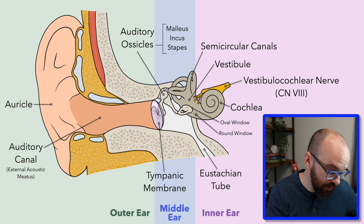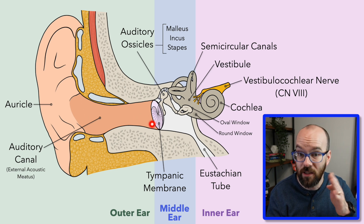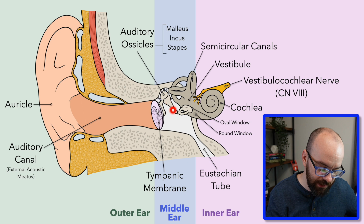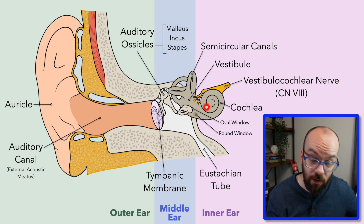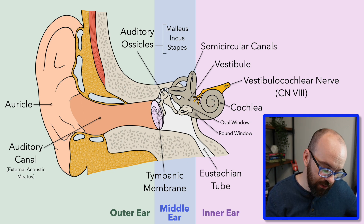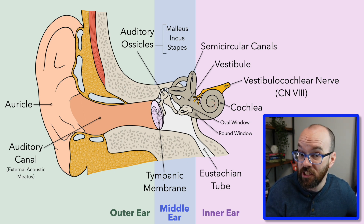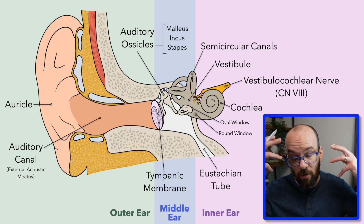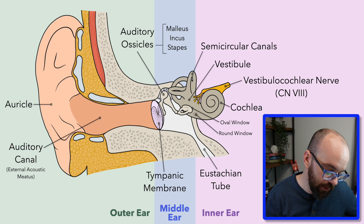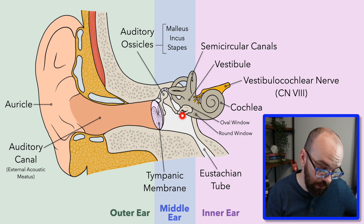Quick recap: the auricle funnels sound through the auditory canal, causing the tympanic membrane to vibrate. The three auditory ossicles — malleus, incus, and stapes — conduct and amplify those vibrations to the vestibule and cochlea. That pushes fluid in the cochlea, creating standing waves detected by specialized hair cells, which send signals through the vestibulocochlear nerve to the brain. The semicircular canals detect balance, and the eustachian tube balances pressure between the middle and outer ear.